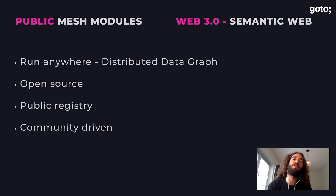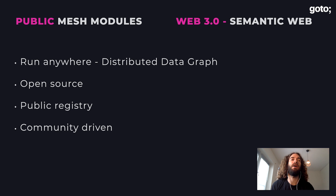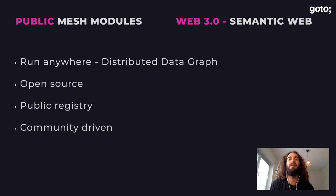Taking this one step further, we can see this is one of the most pragmatic approaches to what everyone calls the semantic web or Web 3.0. We can start having data module graphs inside our company or as open source. We can start building this huge data graph inside a company's community or the open community. The only way for this to work is because it's distributed and can run anywhere. If it's in your company, you have control. If it's open source, anyone can implement their things and add to it, and we can get to a community-driven public data graph.